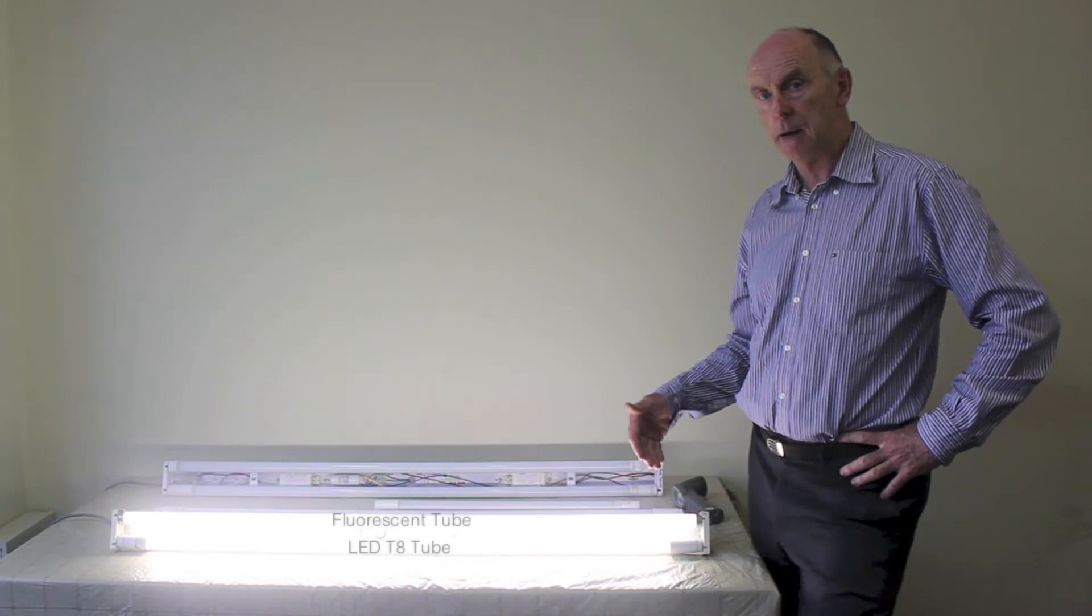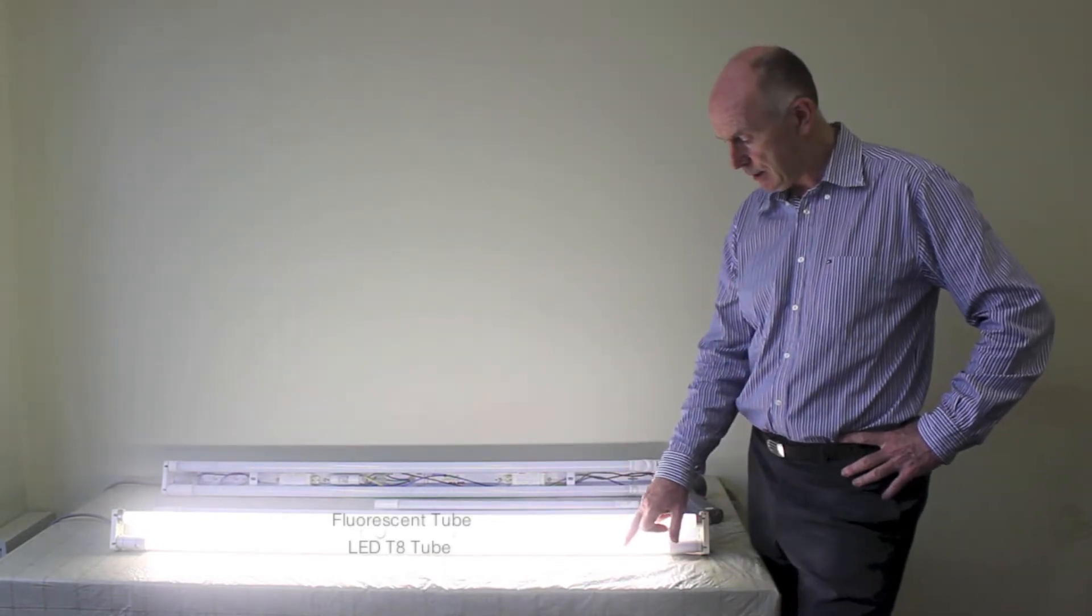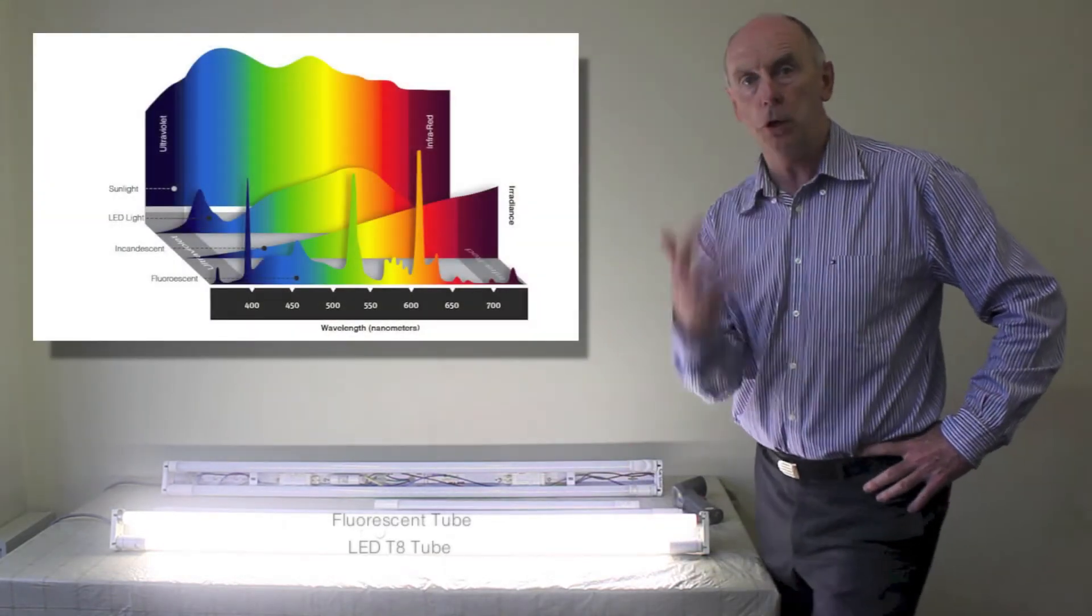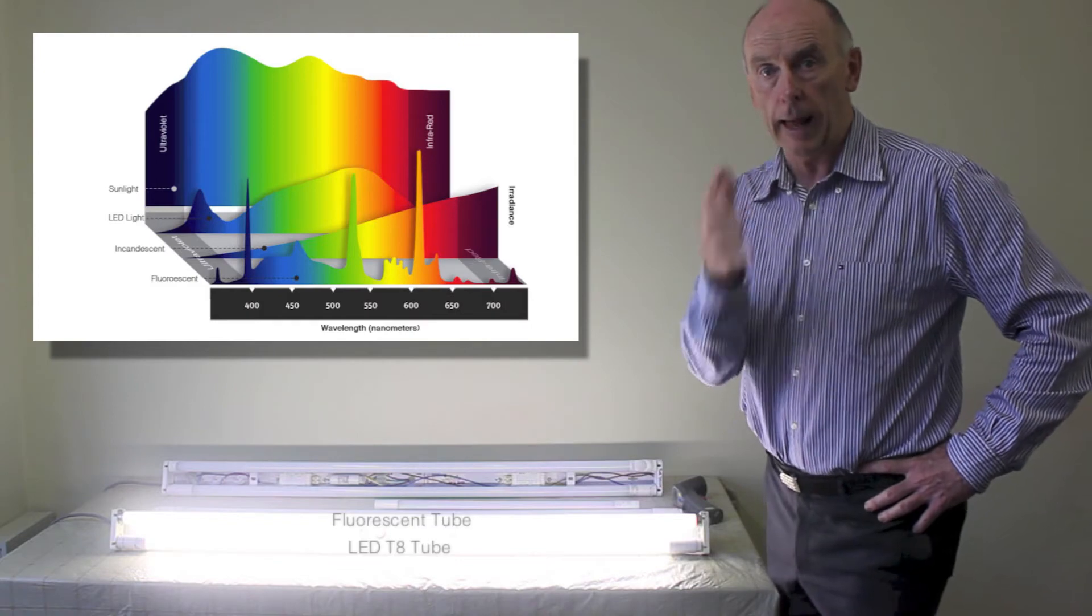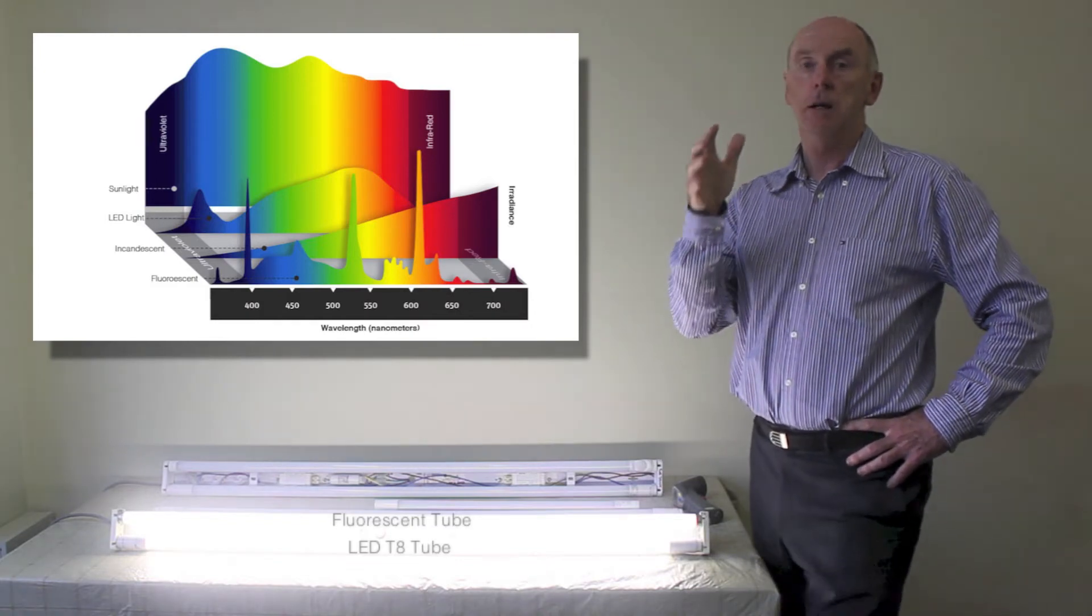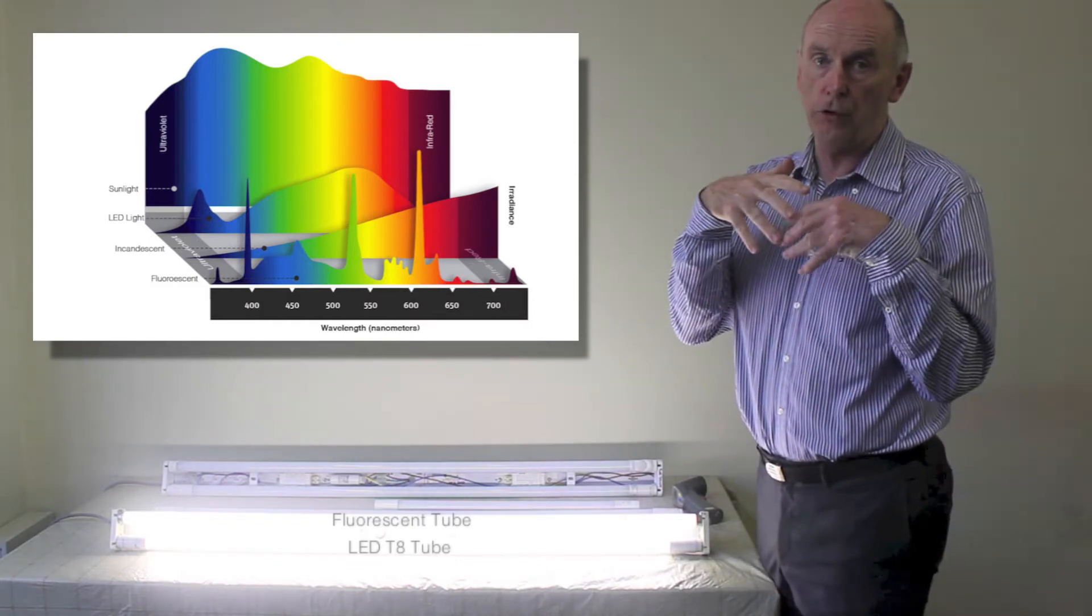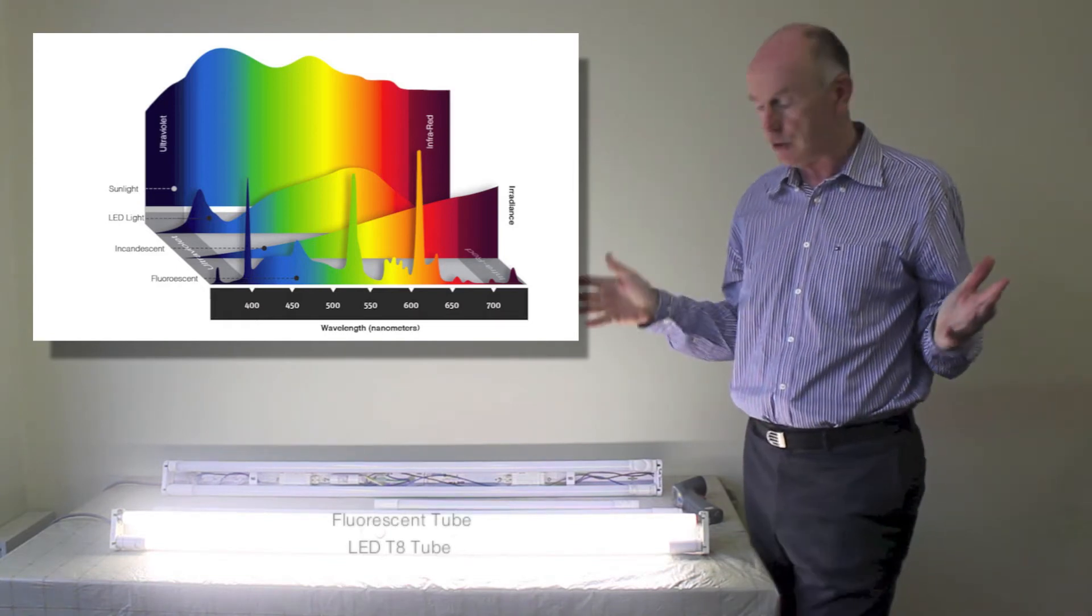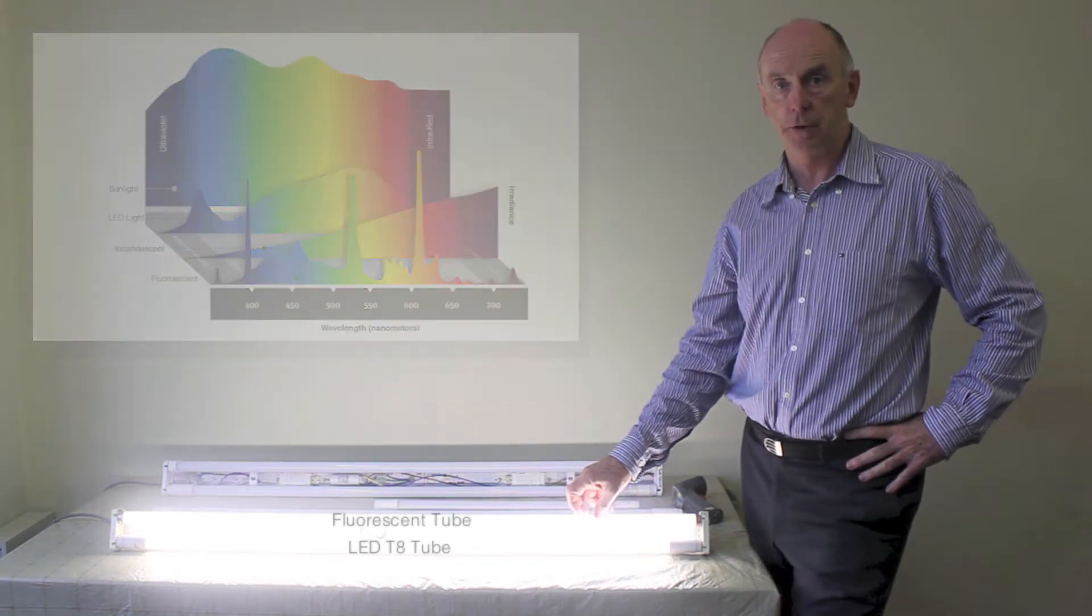The other thing about the two lights is that the LED tube gives you out pure spectrum white light. There's no ultraviolet, there's no infrared, there's no frequencies outside the visible spectrum. Here you've got ultraviolet and you've got infrared.